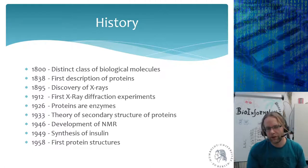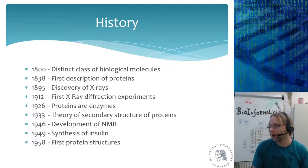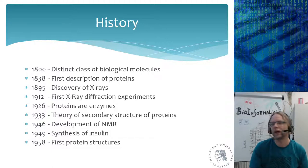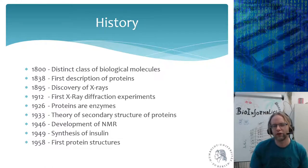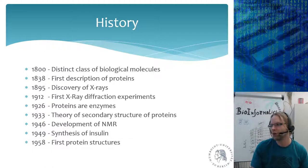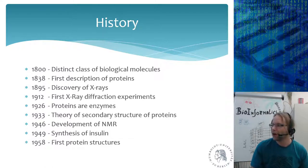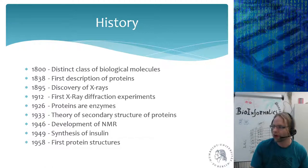In 1895, there was the discovery of X-rays. Then it takes about another 40 years for the first X-ray diffraction experiments. Only then did people start learning about the 3D structure of proteins. When you do an X-ray diffraction, you're able to figure out where the side chains of the amino acids are, and you can start getting an idea of how a protein is shaped.